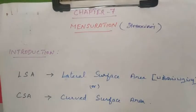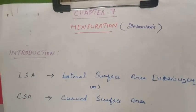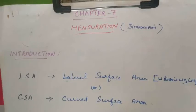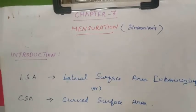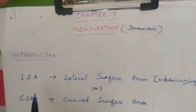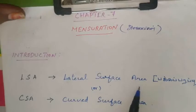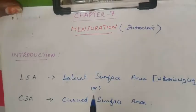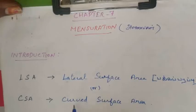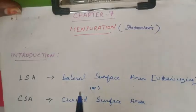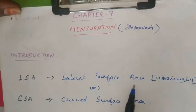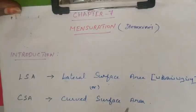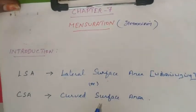First, we can write the area. The area includes lateral surface area and total surface area. LSA is lateral surface area. Lateral surface area is also called curved surface area — it is not a plane side.